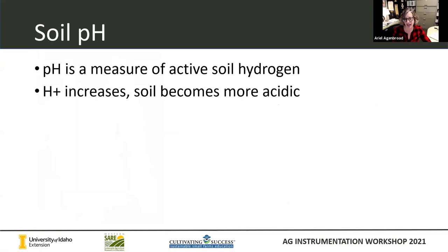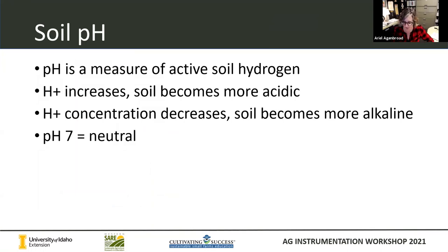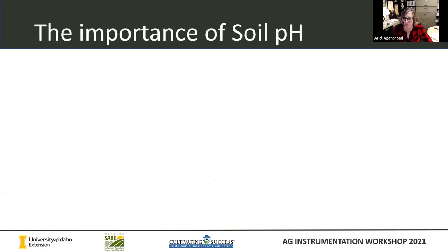Soil pH is basically a measure of the active soil hydrogen. As the hydrogen increases in a soil sample, it becomes more acidic, and as the hydrogen concentration decreases, your soil becomes more basic or alkaline. A pH of seven is neutral. Anything below seven we consider to be an acid substance, and everything above seven we consider to be alkaline or basic. This is true whether you're talking about blood, wine, water, rainwater, soil, bleach — any of our solutions can be tested for pH.